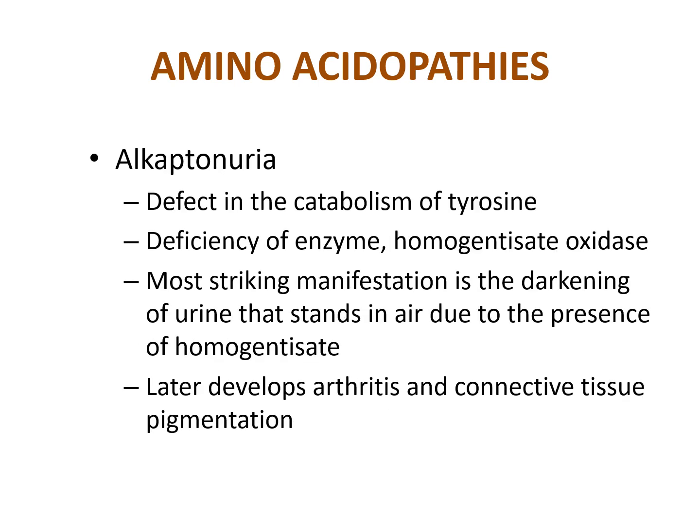One example is alkaptonuria, a defect in the catabolism of tyrosine due to deficiency of the enzyme homogentisate oxidase. The most striking manifestation is the darkening of urine on standing in air due to the presence of homogentisate. Patients later develop arthritis and connective tissue pigmentation.